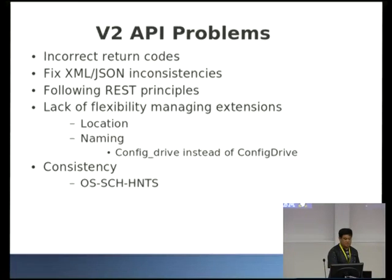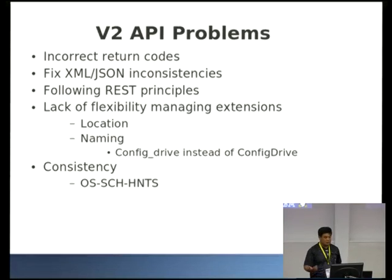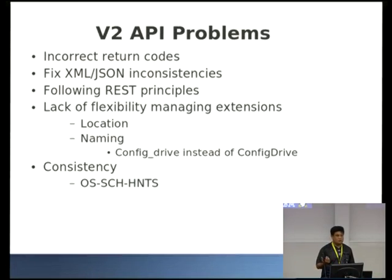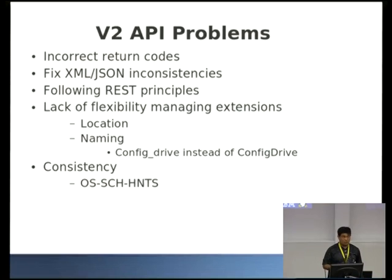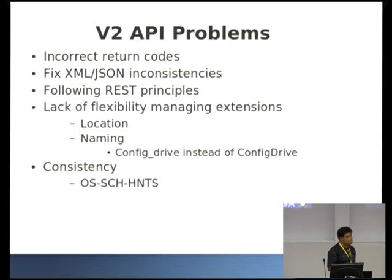Some of the issues we found with the V2 API: incorrect return codes, and the XML and JSON representations of how you talk to the REST API were quite different in quite a few places. In other places the XML was just wrong and didn't work, which is probably a sign that it wasn't actually used a lot. There was also just bad REST design.